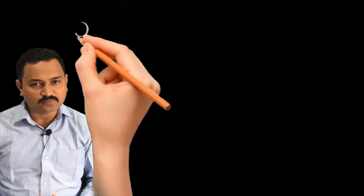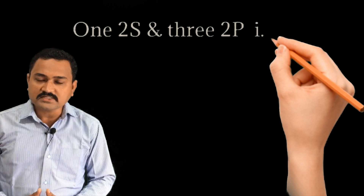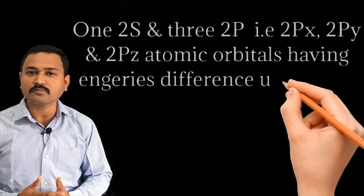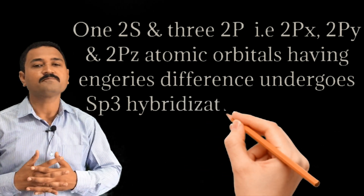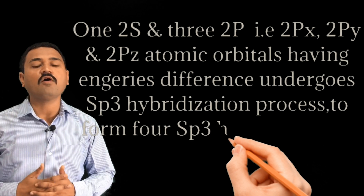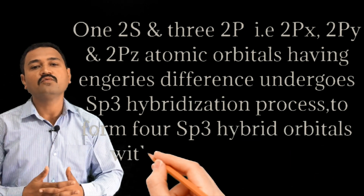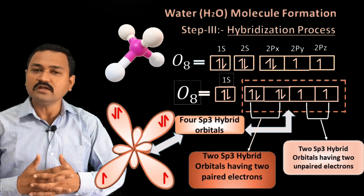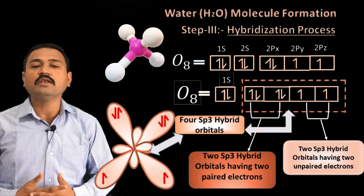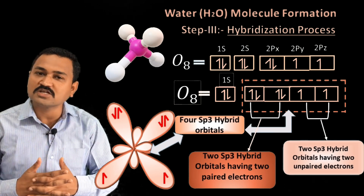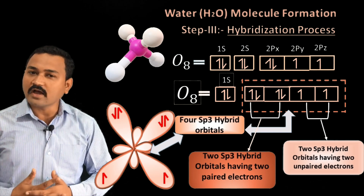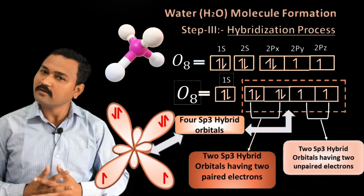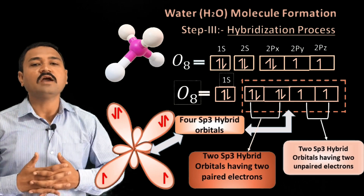During the hybridization process, one 2s and three 2p atomic orbitals — that is 2px, 2py, and 2pz — which have a difference in energy, undergo sp3 hybridization and form four sp3 hybrid orbitals with equivalent energy, size, and shape. These four sp3 hybrid orbitals orient themselves in space in such a manner as to have maximum stability and minimum repulsion, arranging in a tetrahedral manner at the four corners of the tetrahedron, as shown in the diagrammatic representation.